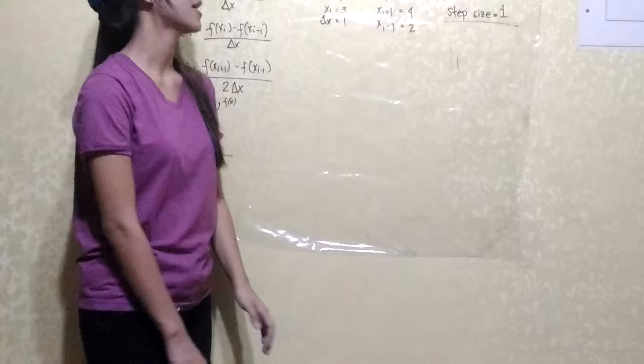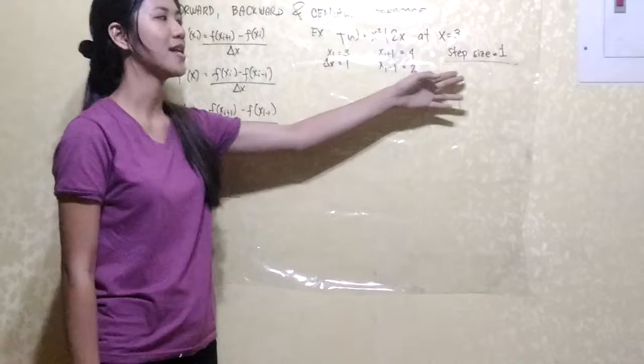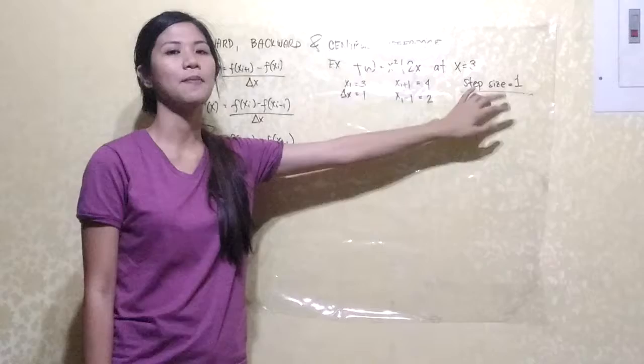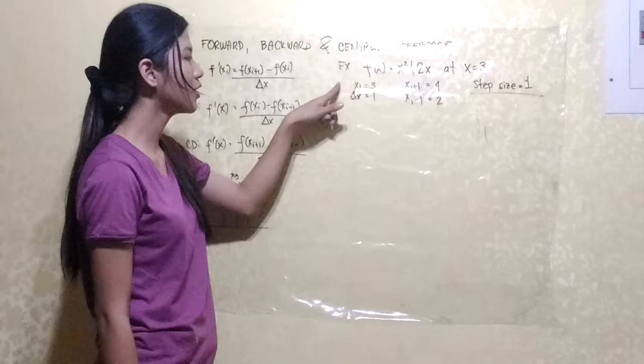So here we have a function: x squared plus 2x at x equals 3, and step size is 1. Our xi here is our point of interest, and our step increment is 1. So x sub i equals 3, and the change of x equals 1.